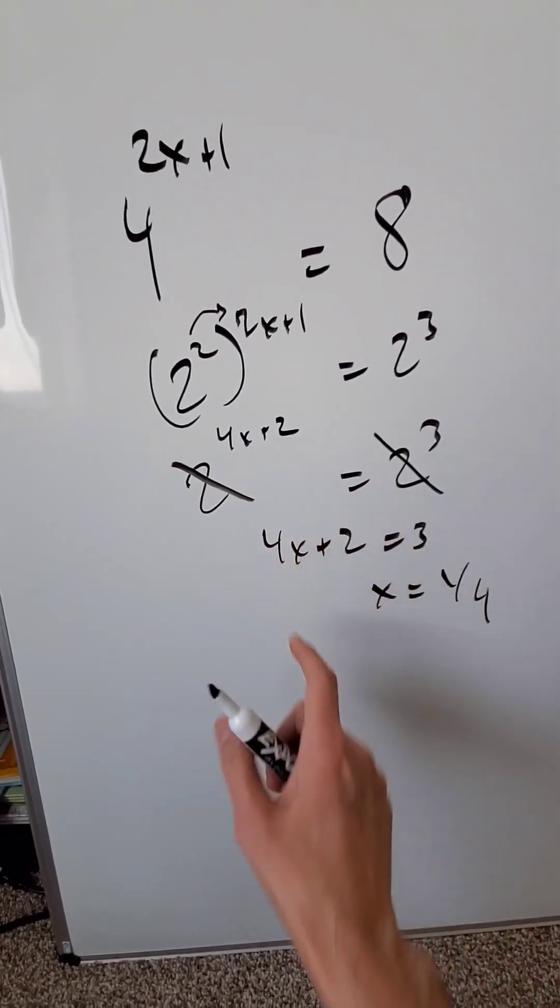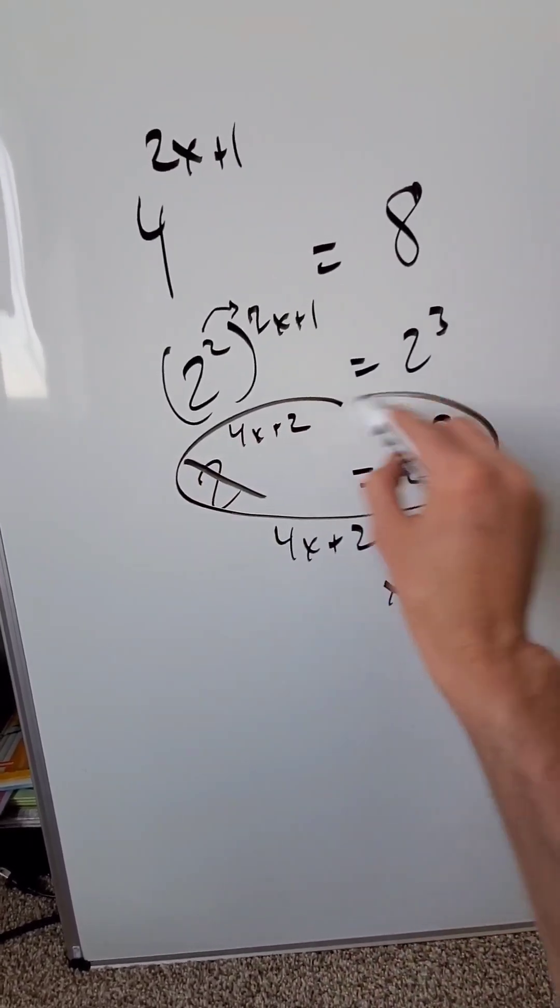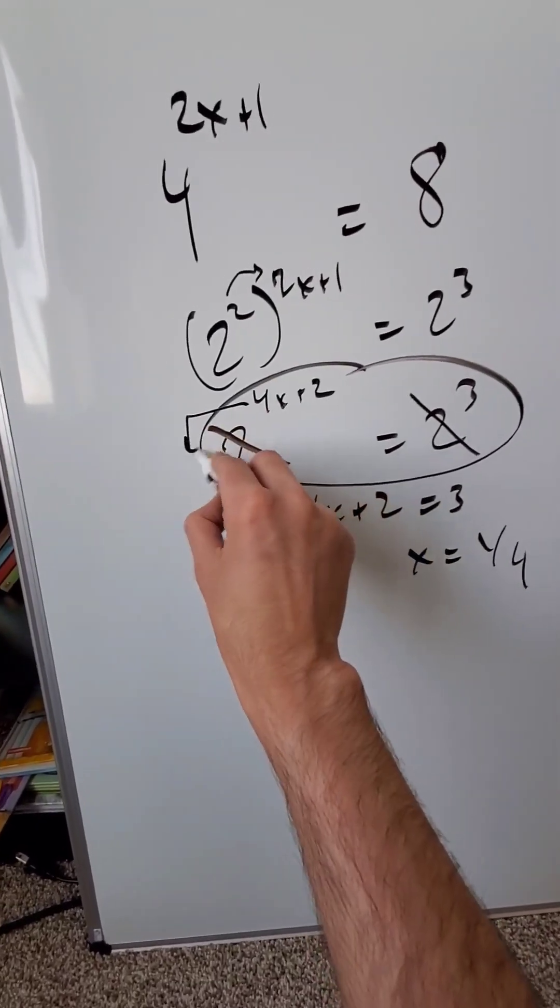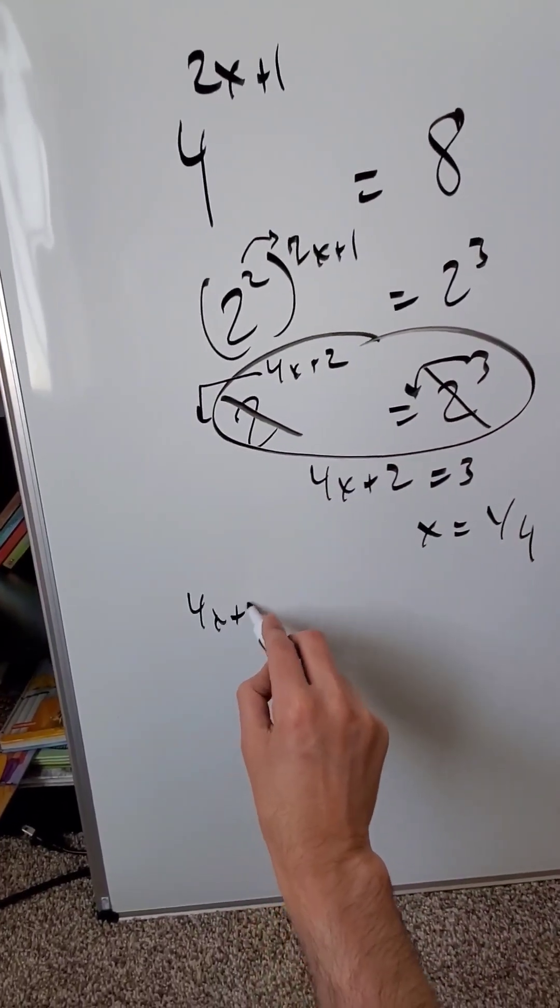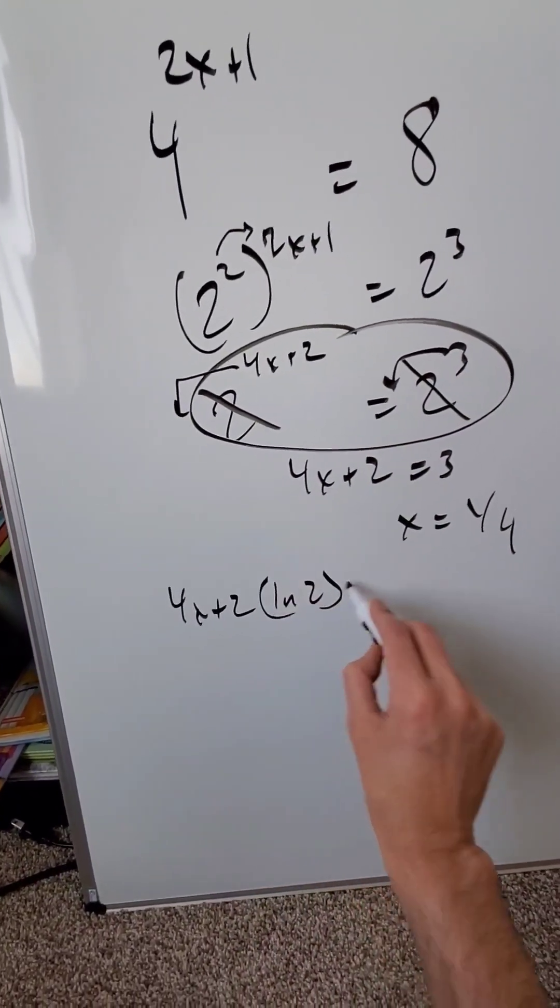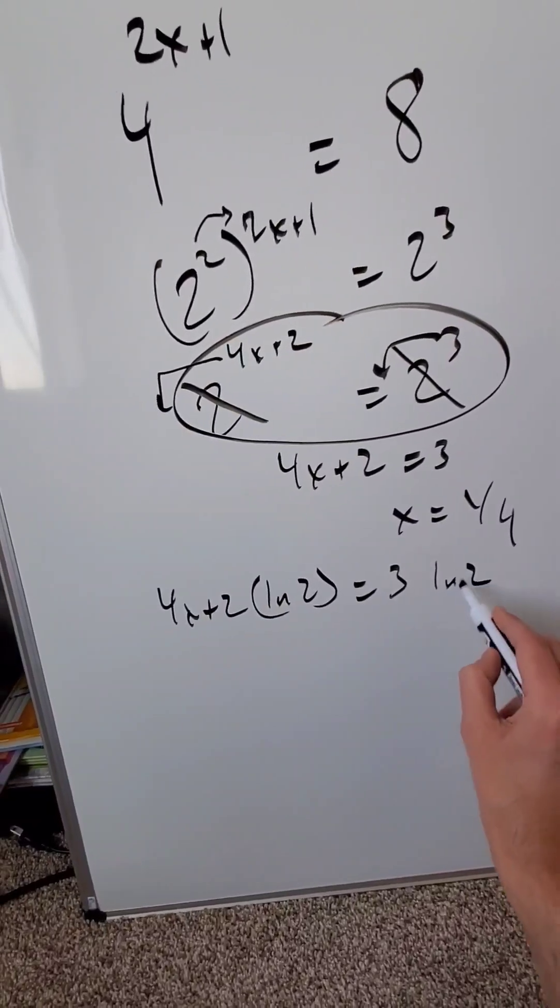But why do these bases cancel out? Look right here at this step and bring in the properties of logs. These exponents become the coefficients. You have 4x plus 2 natural log of 2 is equal to 3 natural log of 2.